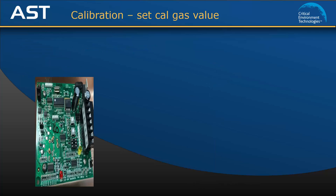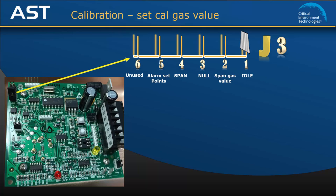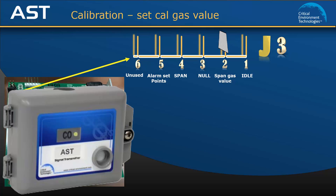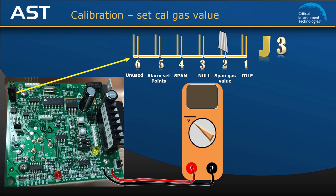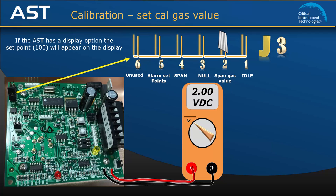Open the AST and find the jumper bank on the left side of the board. Move the jumper from the idle position to position 2, span gas value. The green LED light on the outside of the enclosure will flash once to confirm that it is ready for you to set the calgas value. Attach the voltmeter leads to test points TP1 and TP2. Use the up and down push buttons to adjust the number to the calculated voltage reading on the multimeter, which is 2 volts in this exercise. If the AST has the optional display, the display will read 100 ppm. To complete the set calgas value procedure, move the jumper back to the idle position. The new value will be saved and the LED will change back to solid green.